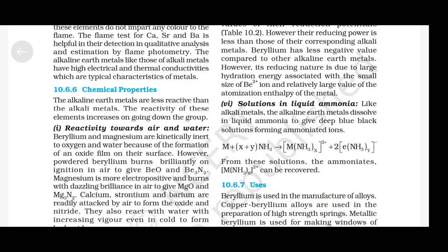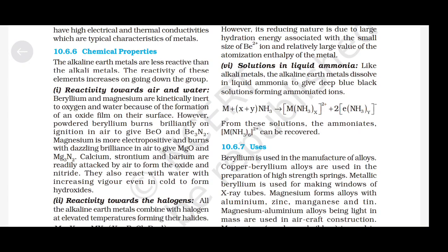Chemical properties: the alkaline earth metals are less reactive than the alkali metals; reactivity increases going down the group. Beryllium and magnesium are kinetically inert to oxygen and water because of the formation of an oxide film on their surface. However, powdered beryllium burns brilliantly in air to give BeO and Be₃N₂. Magnesium burns with dazzling brilliance in air to give MgO and Mg₃N₂. Calcium, strontium and barium are readily attacked by air to form oxides and nitrides, and also react with water with increasing vigor even in cold to form hydroxide.